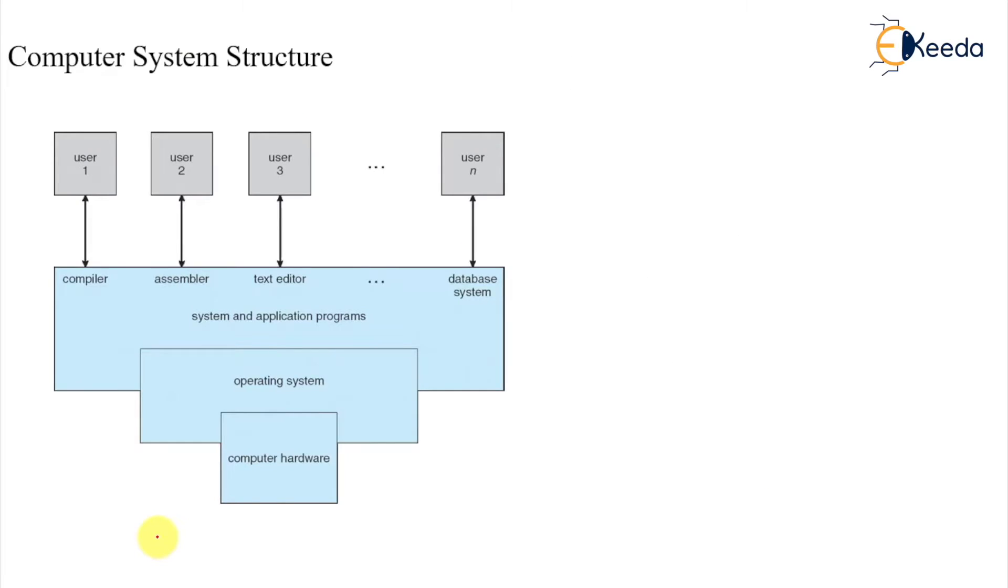Welcome here. We are talking about computer system structure. So what we have seen just before this lecture was the hardware part. We have seen that there are major parts here: the CPU part, then there is a memory part, then there is input/output, and then there is an interconnection bus. So there are four different stakeholders of this computer system.